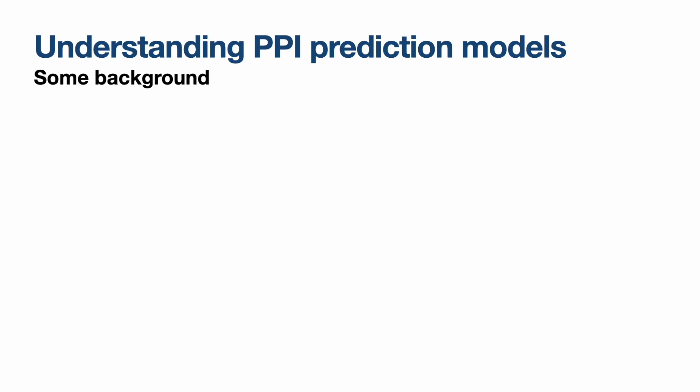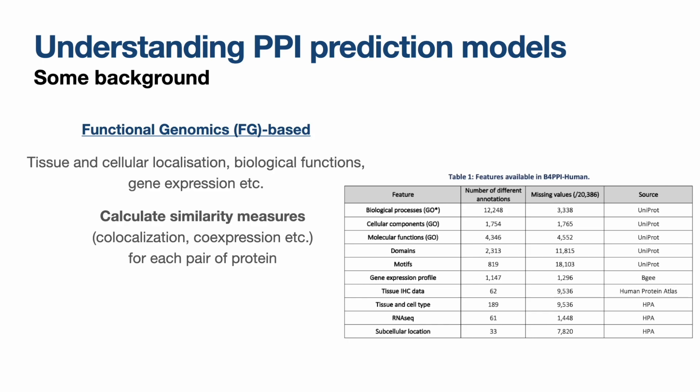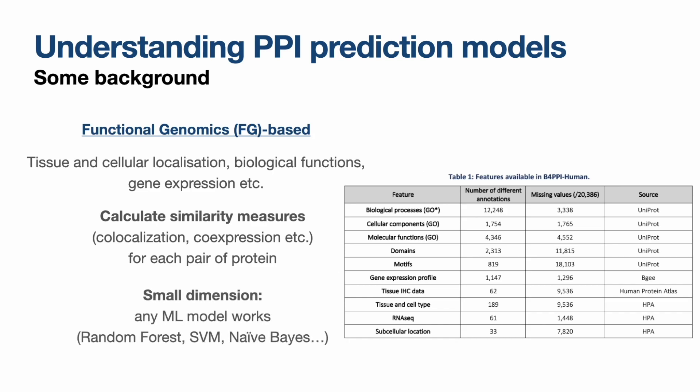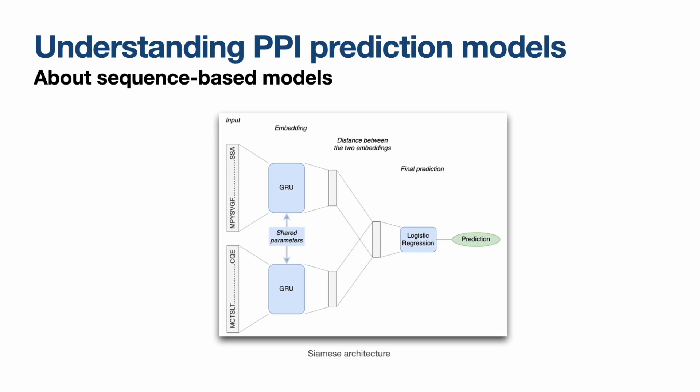Once we have that, we can start diving into existing models to understand what happens. There are two main approaches to predicting PPIs. The first, perhaps the most intuitive one, is based on functional genomics information — the idea is to measure similarity between pairs of proteins, and if you have enough similarity, the probability of interaction is higher. The benefit is it's low-dimensional with only a few features, so you can use standard machine learning models. On the other end of the spectrum, we have models relying on amino acid sequences alone. The information is richer and less biased, but much harder to handle. One approach to deal with that is the Siamese network — happy to discuss further.